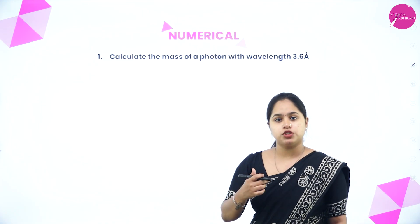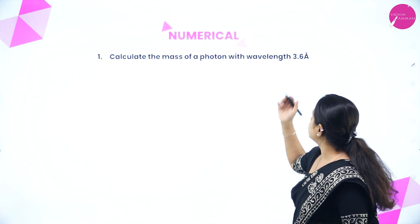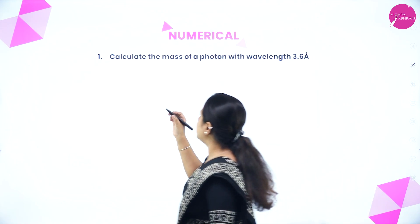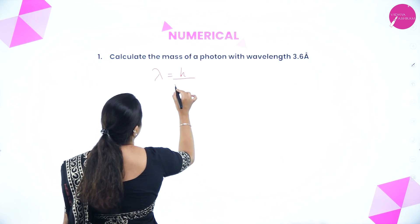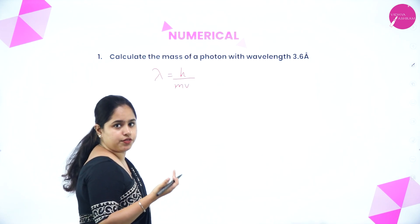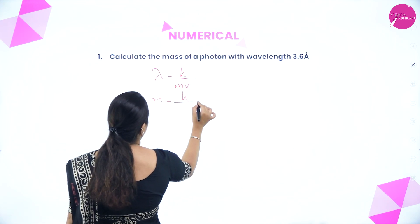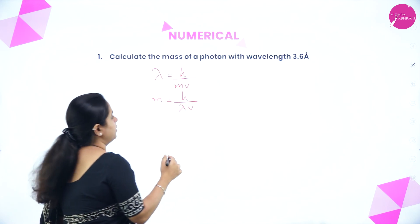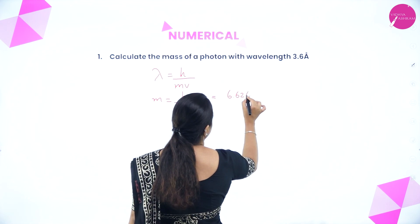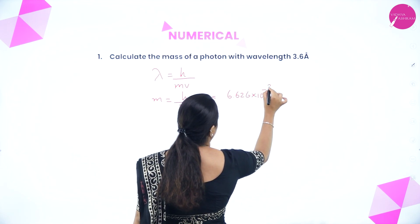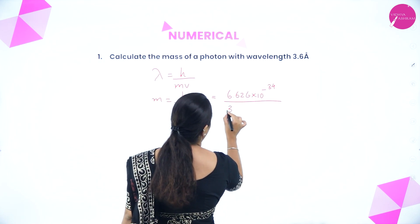Let's do a question based on this equation: Calculate the mass of a photon with wavelength 3.6 angstrom. We know lambda = h/mv, so rearranging, m = h/(lambda × v). We substitute h = 6.626 × 10⁻³⁴, and lambda = 3.6 angstrom. Since 1 angstrom = 10⁻¹⁰ meter, lambda = 3.6 × 10⁻¹⁰ m.